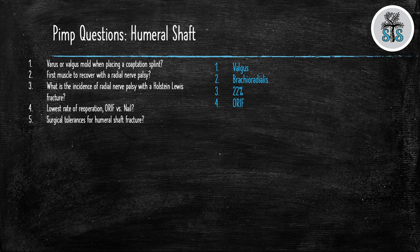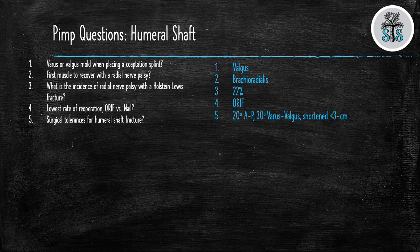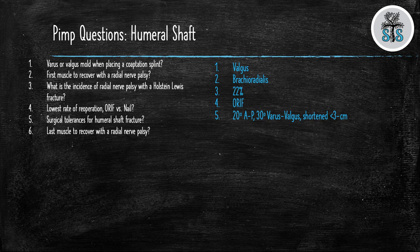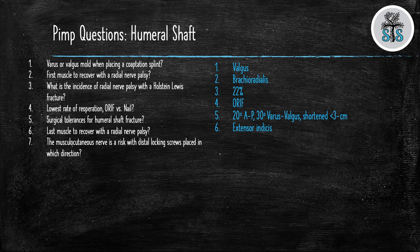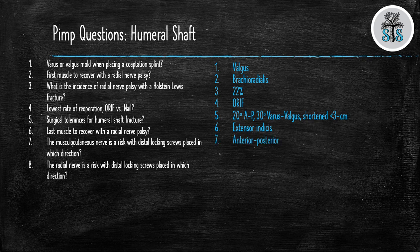Question 5: What is the surgical tolerances for humeral shaft fractures? 20 degrees anterior-posterior, 30 degrees varus valgus, and shortening less than 3 centimeters. What is the last muscle to recover with a radial nerve palsy? Extensor indices. The muscular cutaneous nerve is at risk with distal locking screws placed in which direction? Anterior-posterior. The radial nerve is at risk with placing distal locking screws placed in which direction? Lateral to medial.